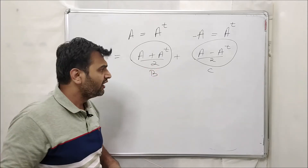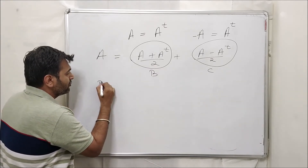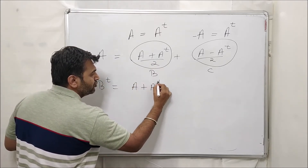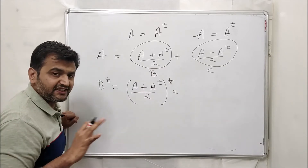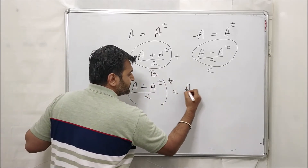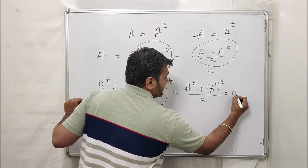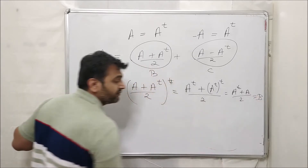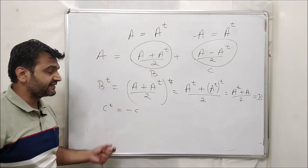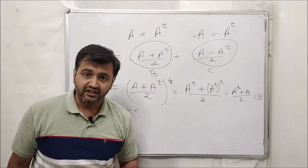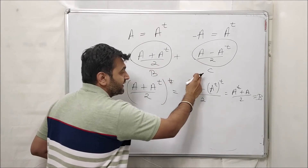I will prove that B and C are symmetric and skew-symmetric respectively. For B, I want to show B transpose equals B. Taking the transpose of (A plus A transpose) over 2 gives (A transpose plus A) over 2, which is B again. So B is symmetric. Similarly, you can prove C is skew-symmetric — if you get stuck, ask in the comments. So we can write matrix A as a sum of a symmetric and skew-symmetric matrix.